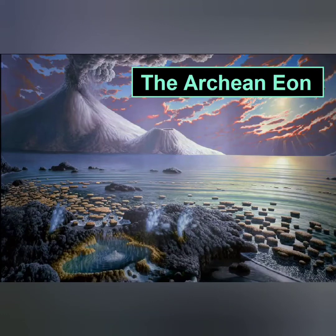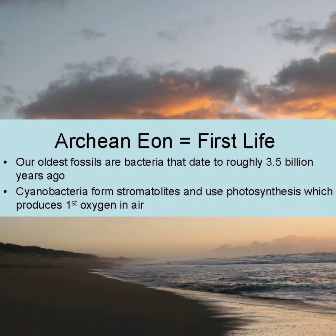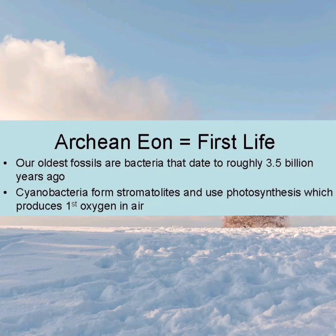The Archean Eon is the second of the four geological Eons of Earth's history, representing the time from 4,000 to 2,500 million years ago. At this time, Earth's crust had cooled enough to form continents and for the earliest known life to start. Life was very simple — shallow water microbial mats called stromatolites existed. However, there was no free oxygen in the atmosphere. The major event in the Archean Eon was the formation of oceans and continents. Where did the water come from?